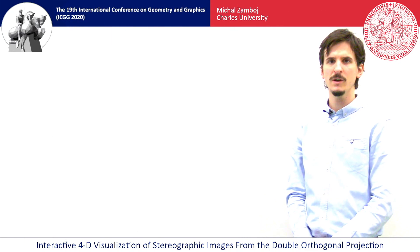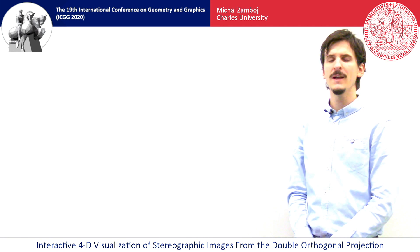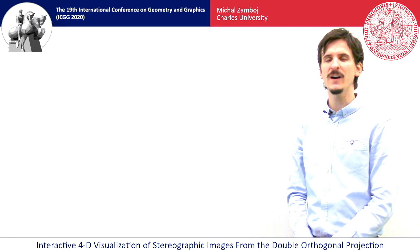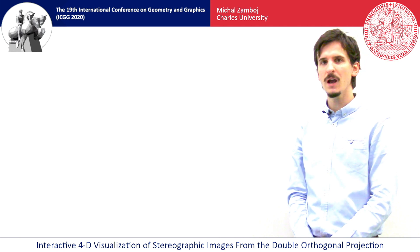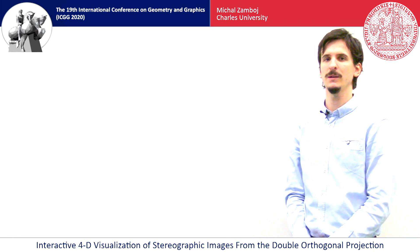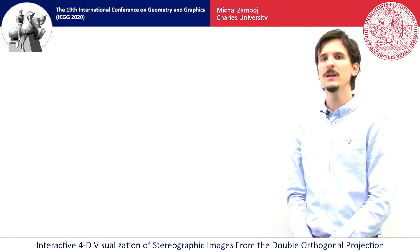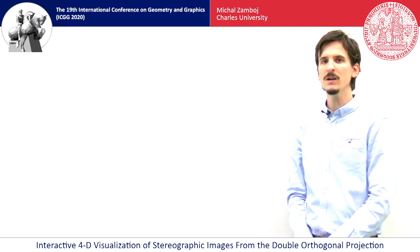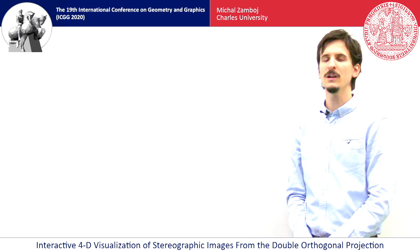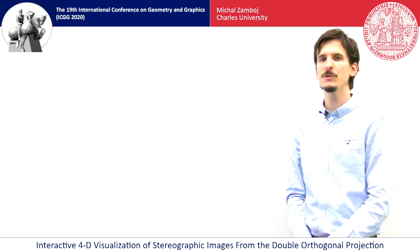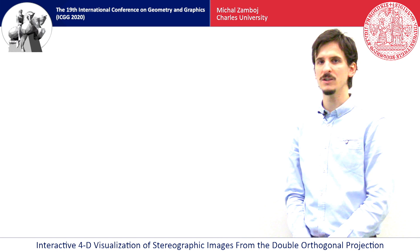My name is Michal Zamboy and I'm from Charles University in Prague. First of all, let me thank the organizers of ICGG for this possibility to present our contributions even in these complicated times. I will speak about constructions in the four-dimensional space using stereographic projection. To build up the upcoming analogy, let me start with the stereographic projection in the three-dimensional space.